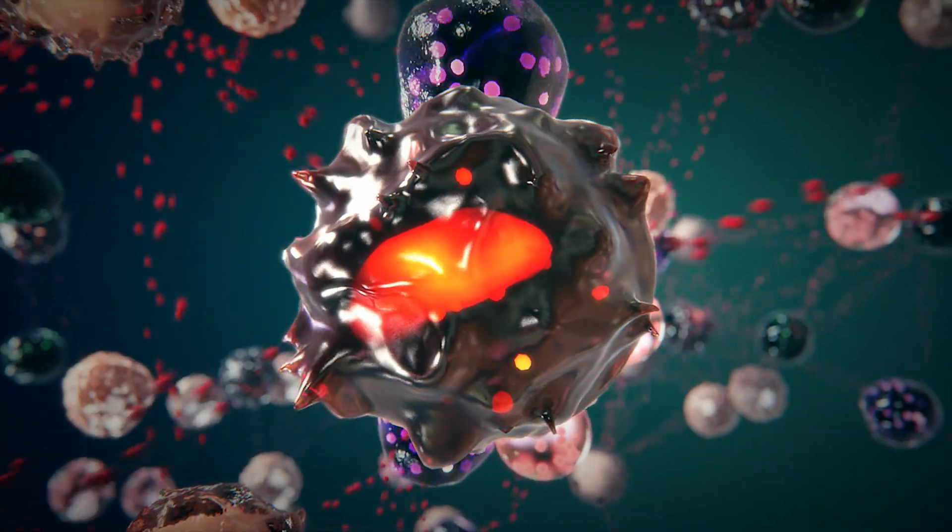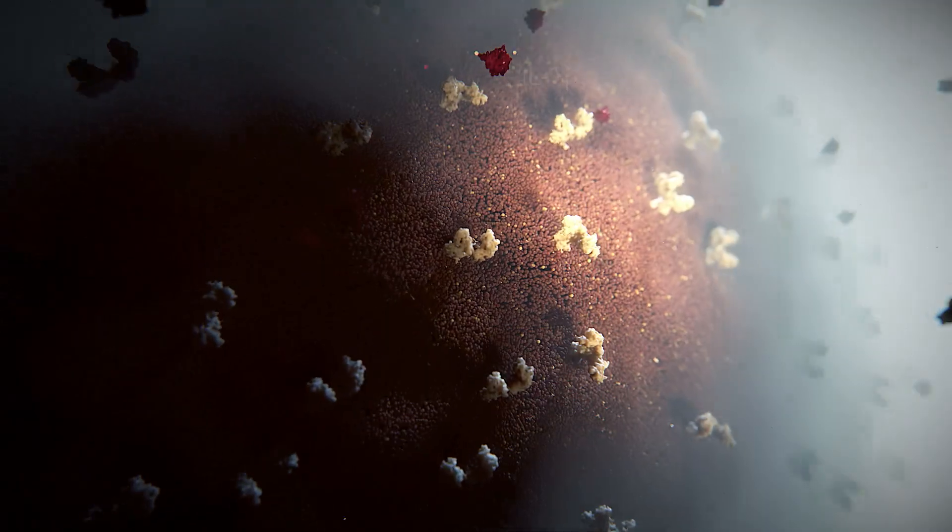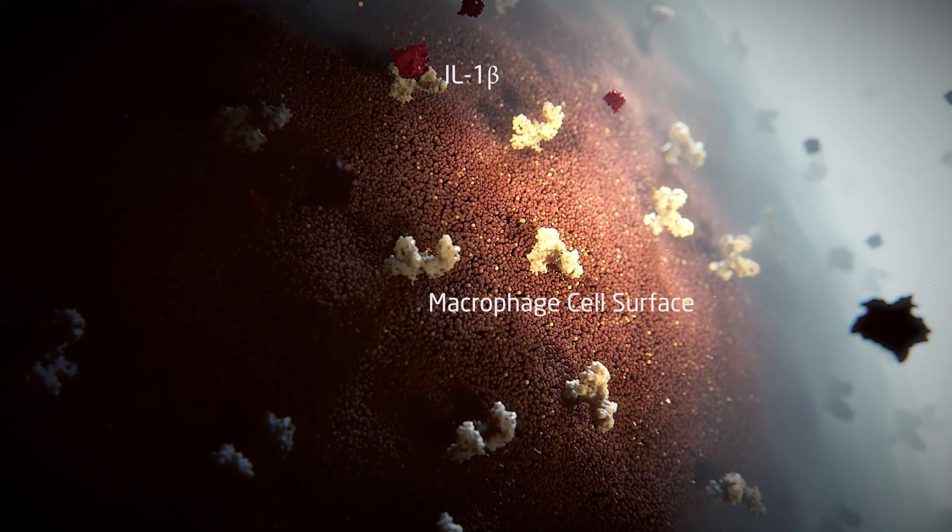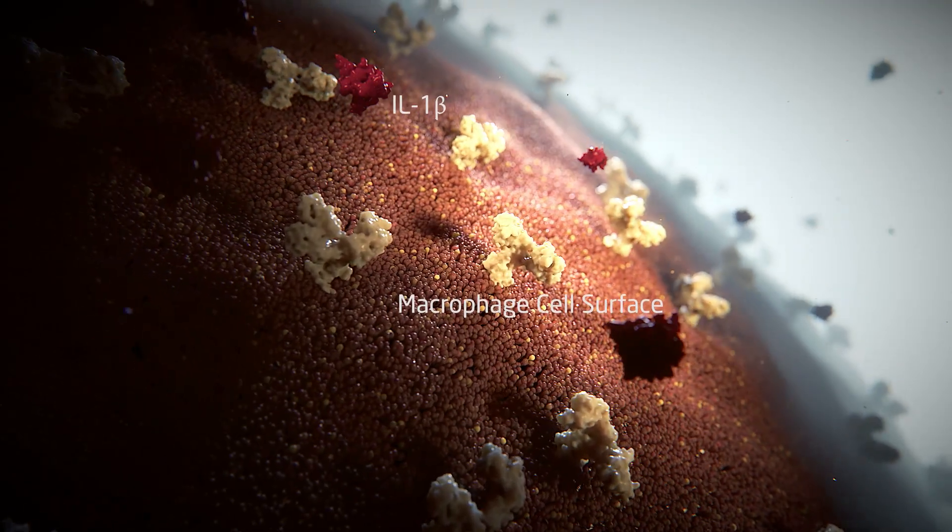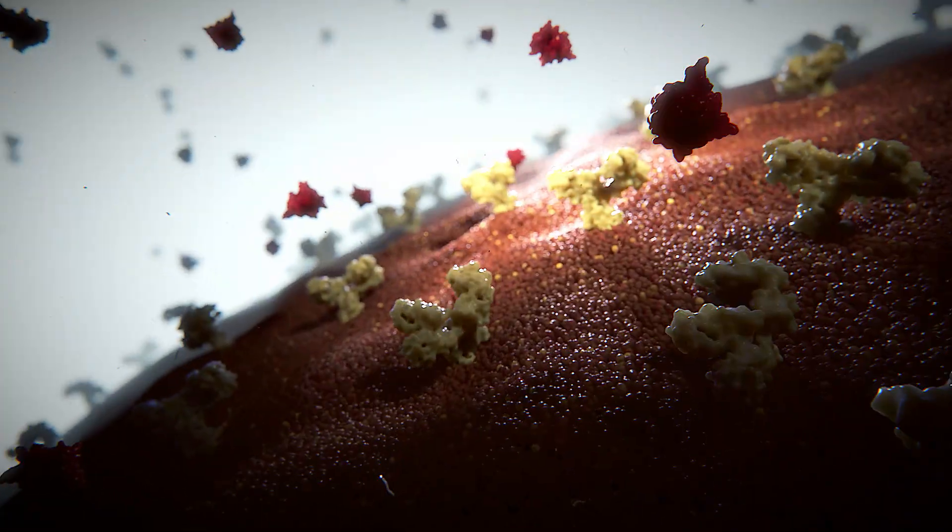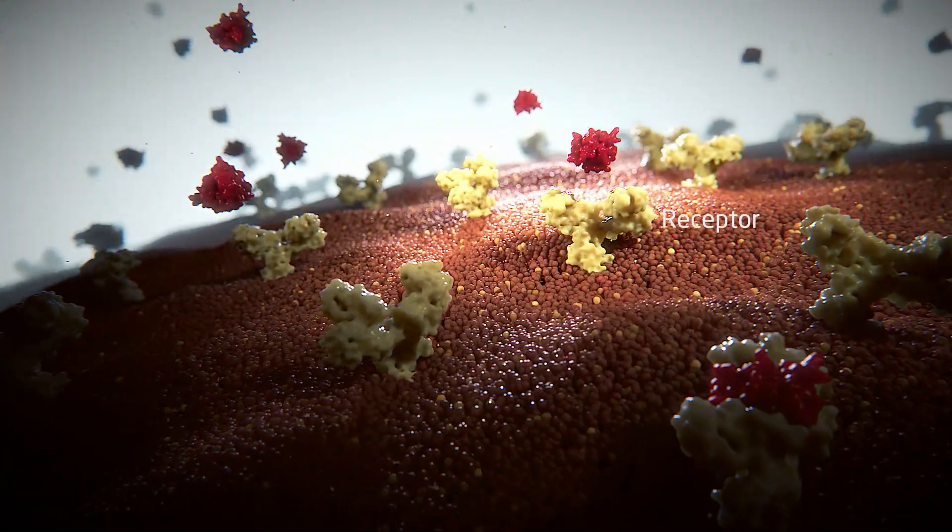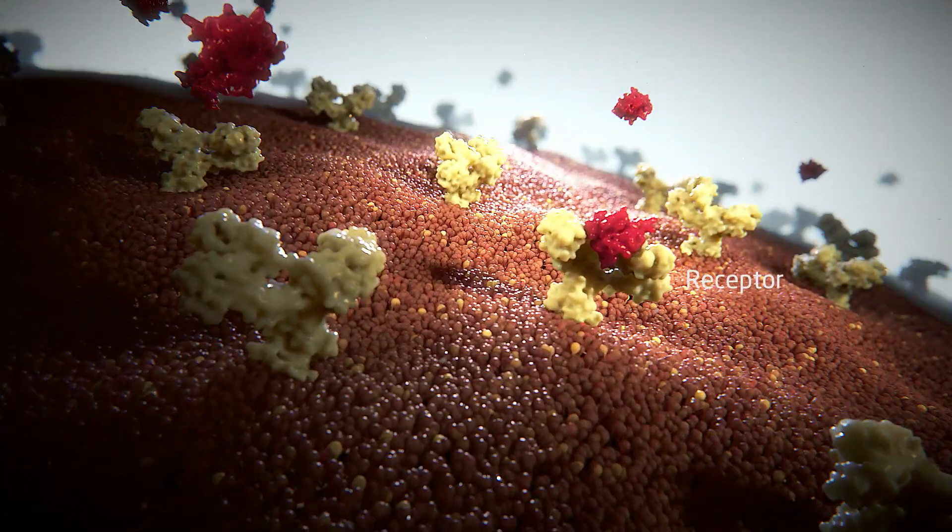Such signaling molecules of the innate immune system include interleukin-1, which is typically overexpressed following infection or injury. Through its receptor, it is thought to affect nearly every cell type within the body.